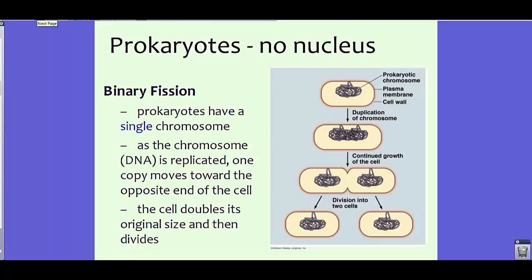Here again is a picture of binary fission. Prokaryotes have a single chromosome — a really long piece — unlike eukaryotes, which have several; for instance, humans have 46. As the chromosome is replicated, one copy moves toward opposite ends of the cell. Here you can see the prokaryote gets duplicated, the copies move to opposite ends, the cell doubles in size, and then it divides — it pinches off. Each new cell is identical to the original.